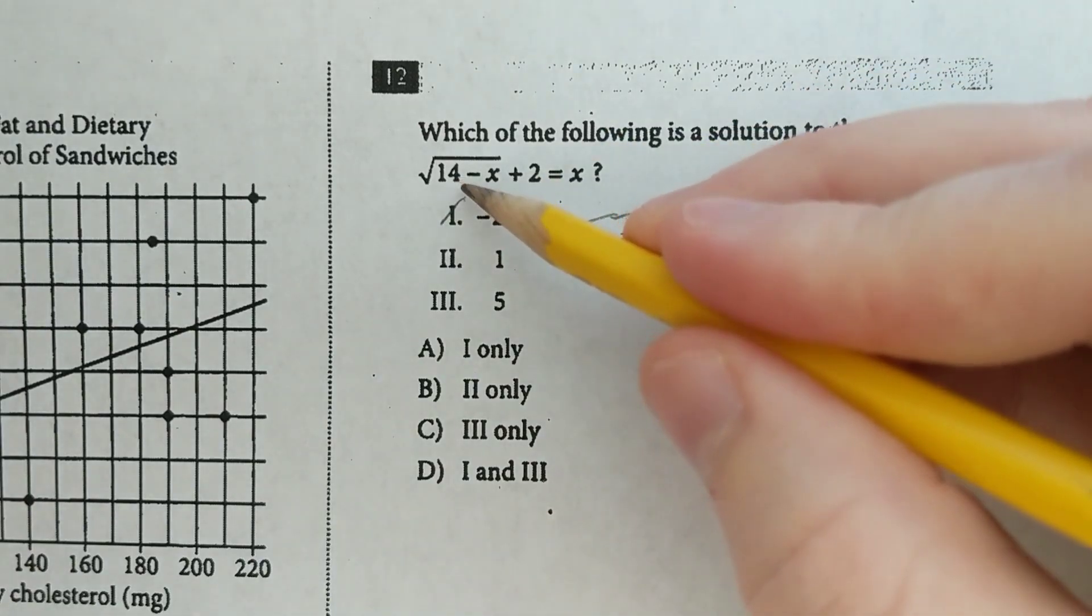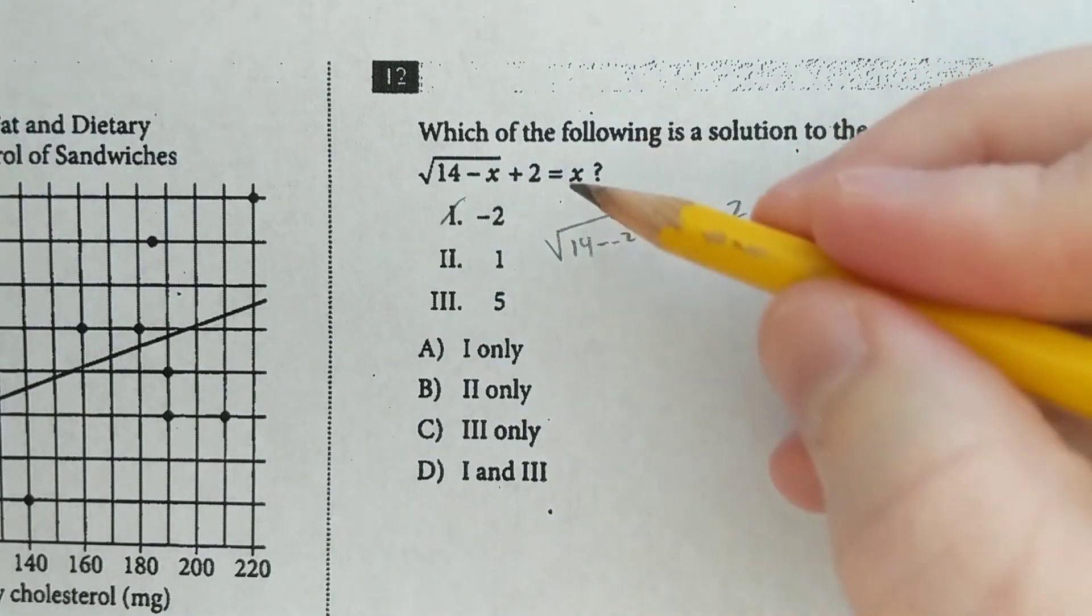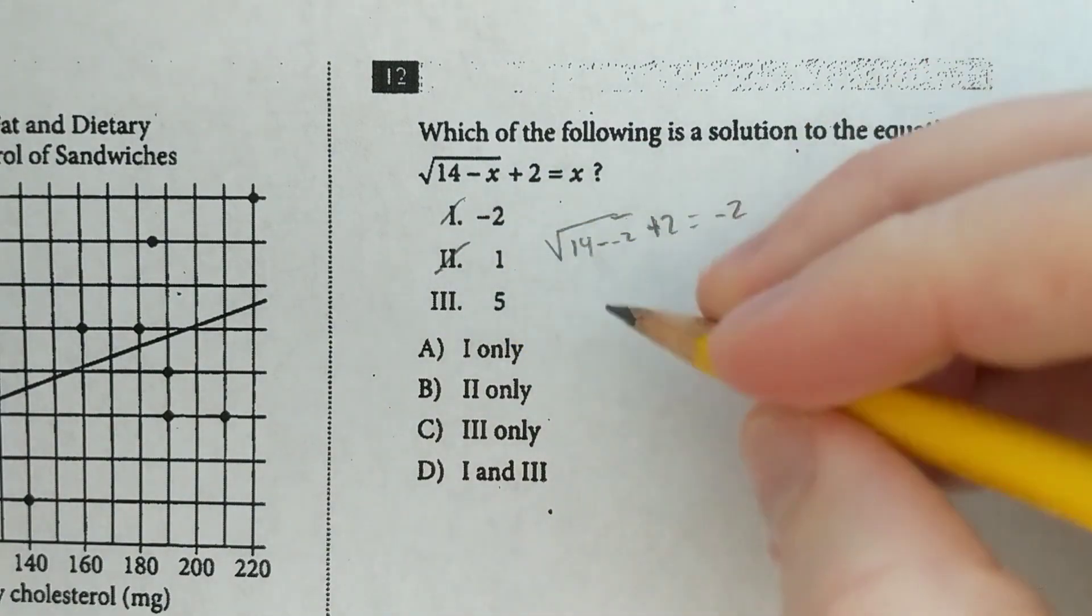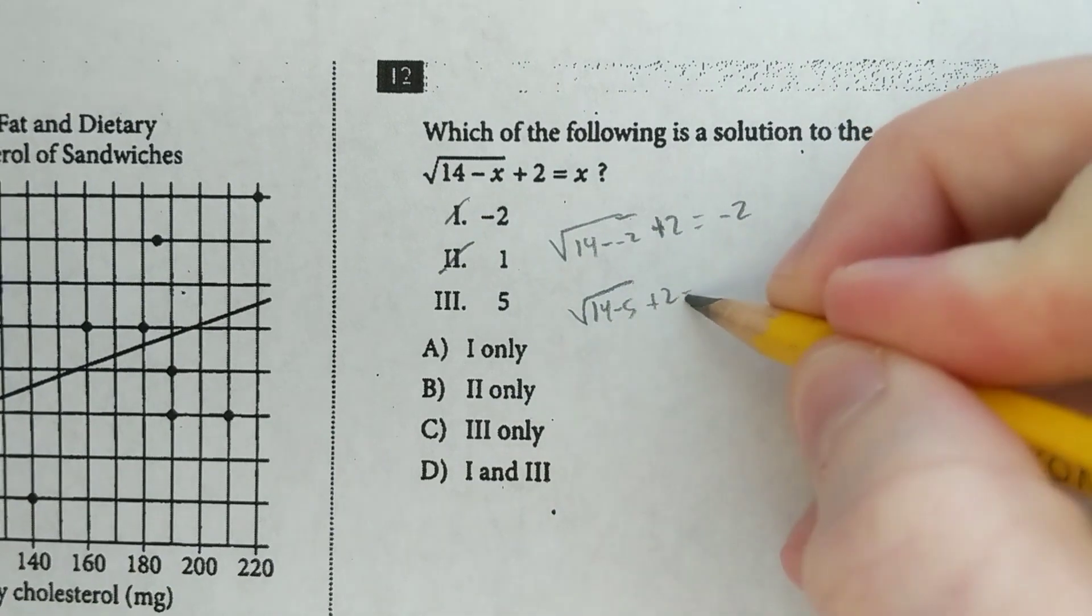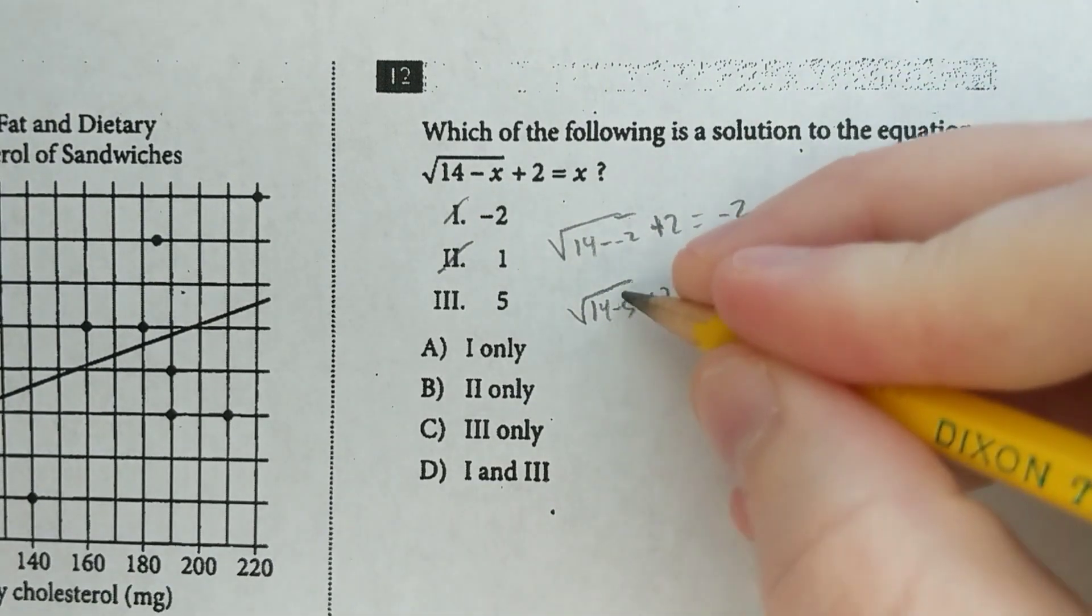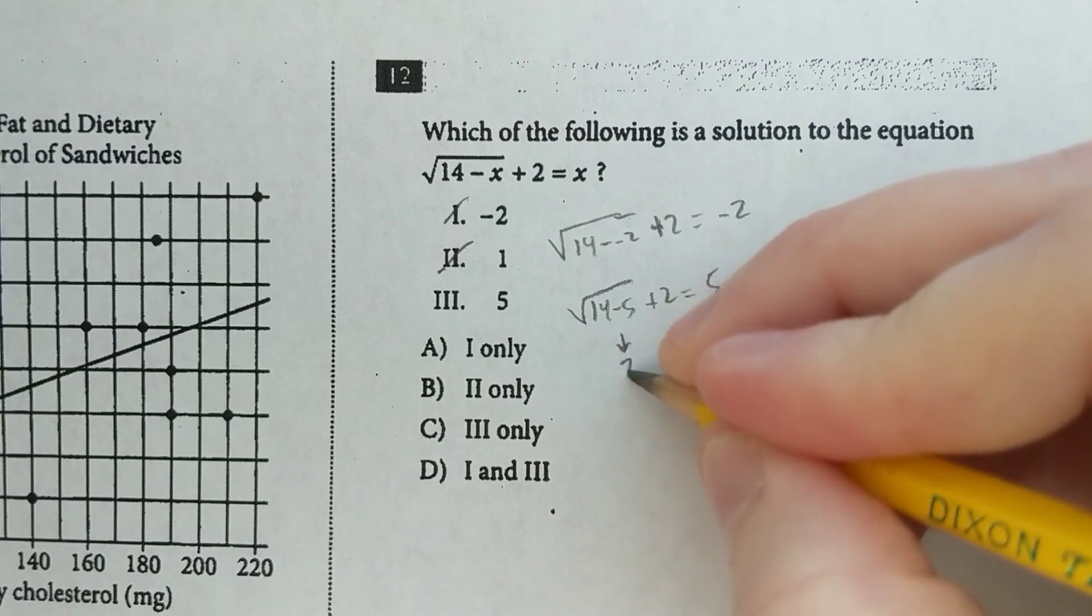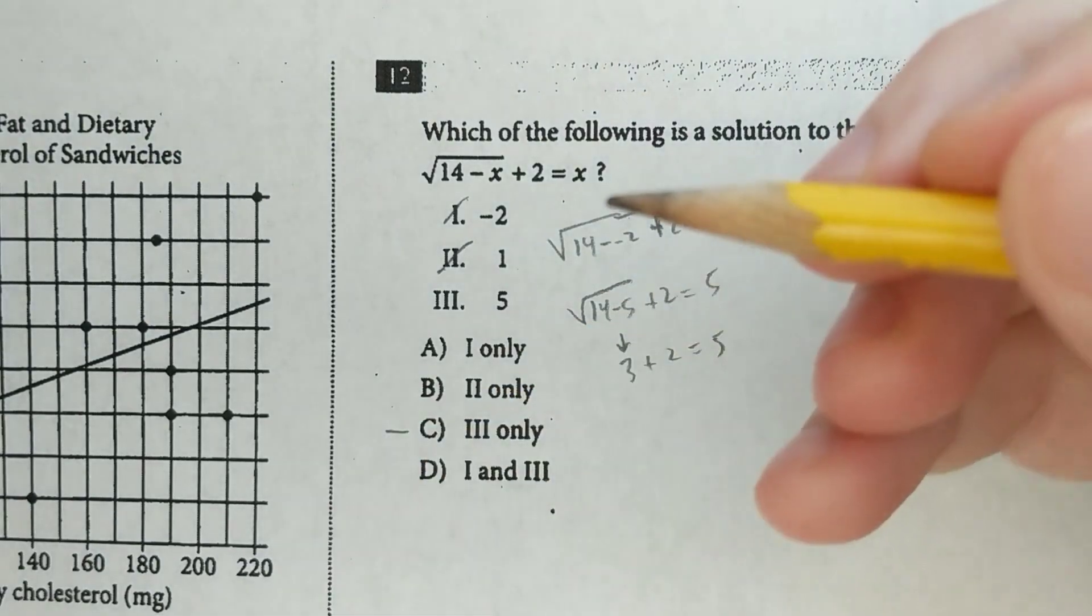This one, you start to plug in the square root of 14 minus 1, you get the square root of 13. There's no way that's going to work out. So now we try the last one. Square root of 14 minus 5 plus 2 equals 5. So that's the square root of 9, which is 3 plus 2, and that does equal 5. So that's 3 only.